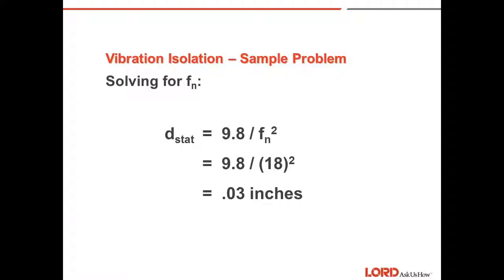Solving for Fn, we can calculate the static deflection, which is 9.8 divided by the natural frequency squared. In this case, it's 18. 9.8 divided by 18 squared. The static deflection required of the isolator is 0.03 inches.